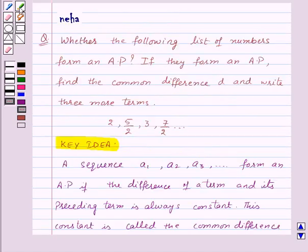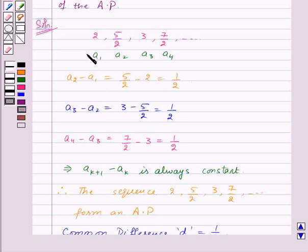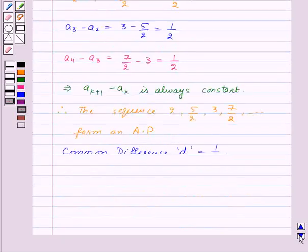Now, we need to find three more terms. So, for this sequence, the fifth term will be A4, that is 7 by 2 plus common difference, that is 1 by 2. So, here we have A5 is equal to 7 by 2 plus 1 by 2 which is equal to 8 by 2, that is 4.